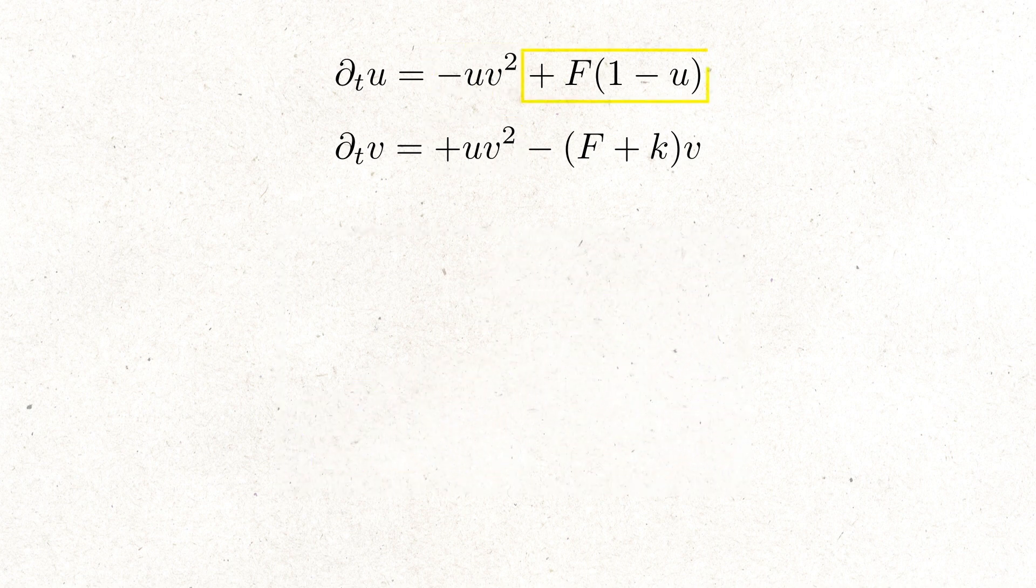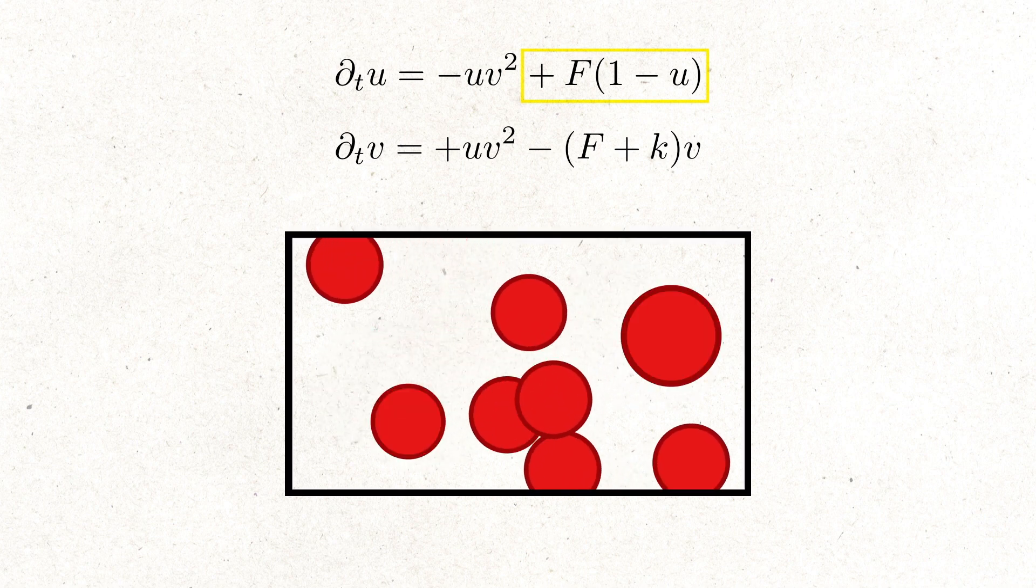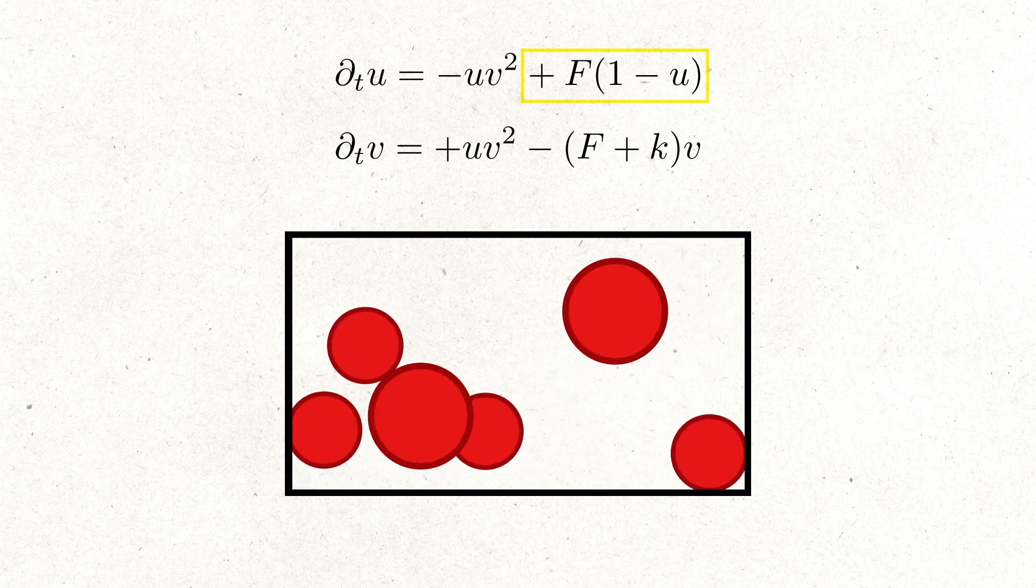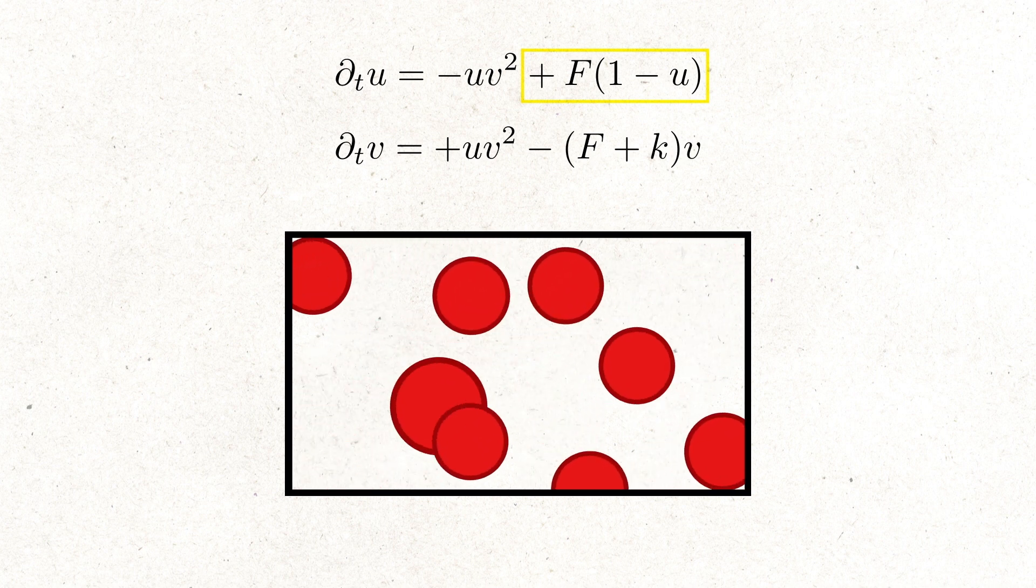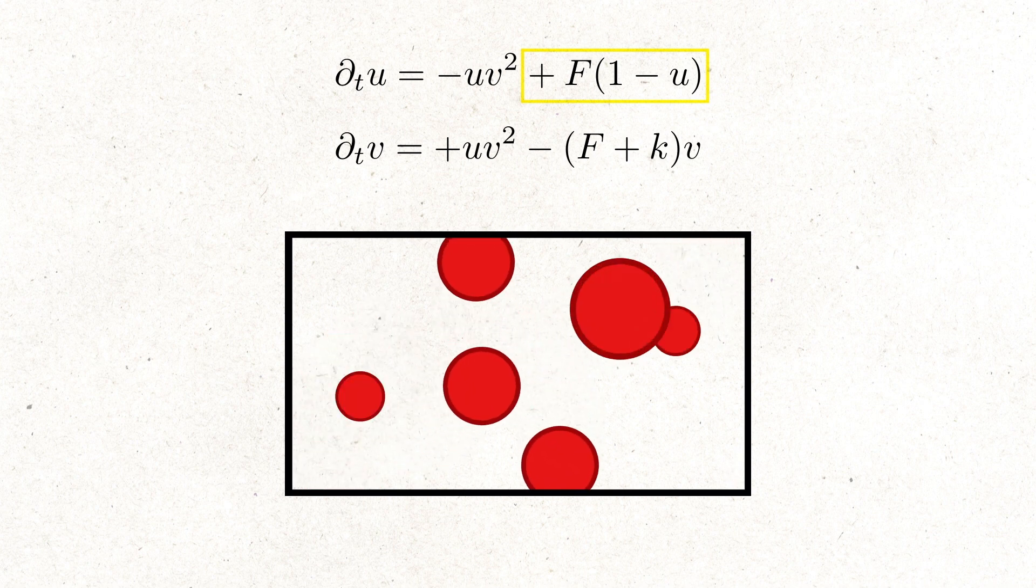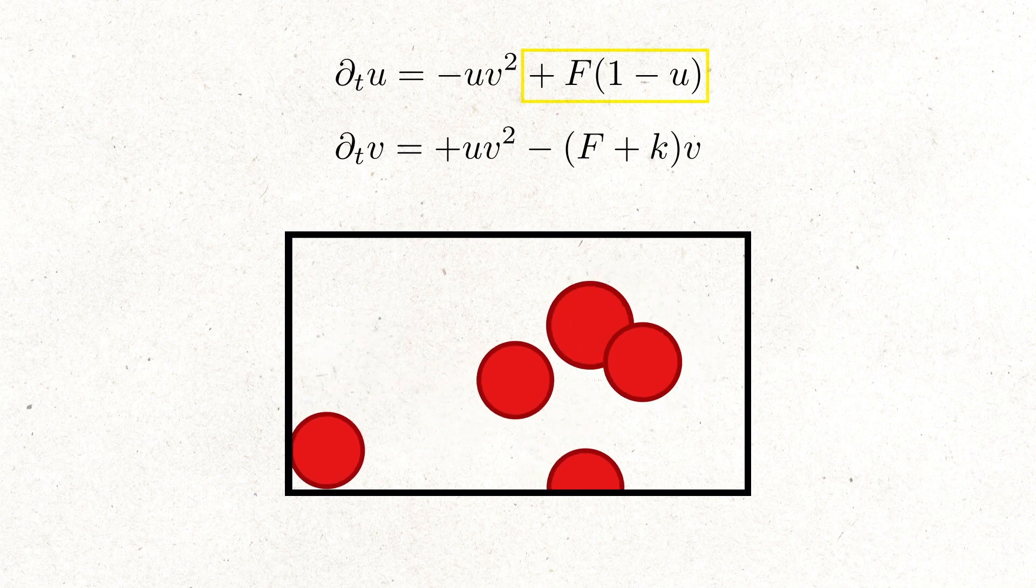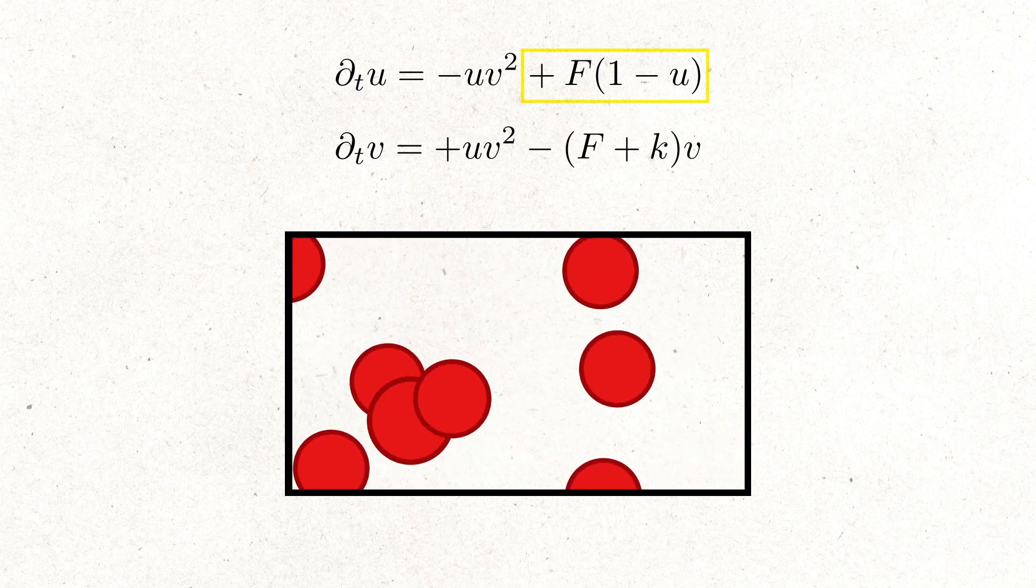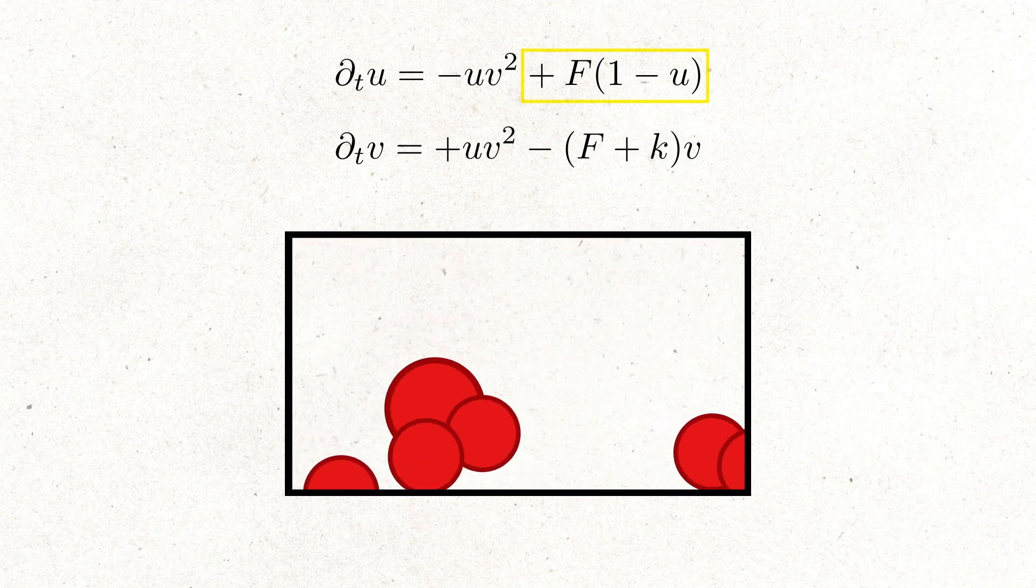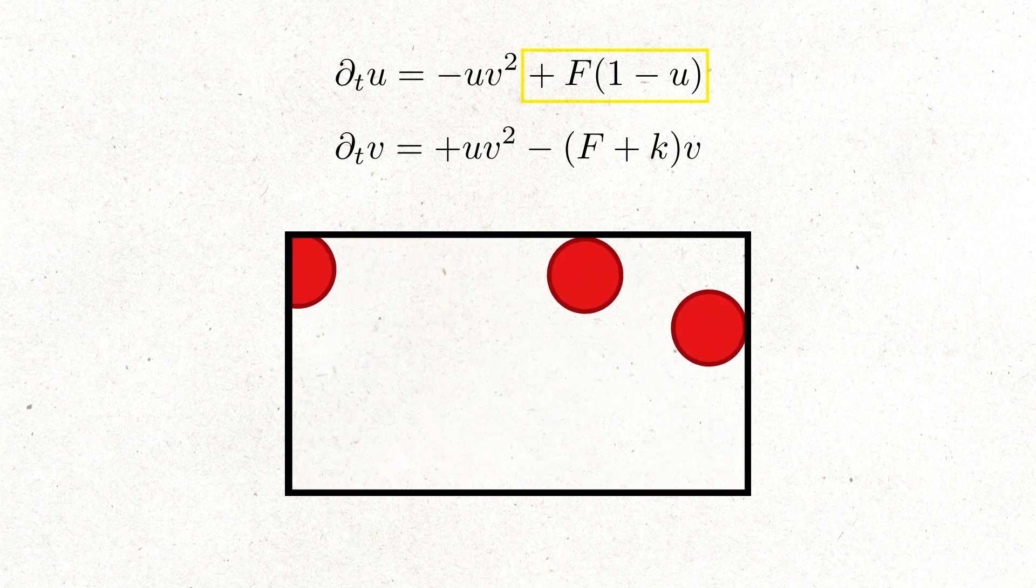The second term on the right-hand side in the first equation describes how substance U is constantly added. This is necessary as otherwise U would simply be used out. The feed rate is given by a parameter F multiplied by 1 minus U. That measures that U is added by a rate dependent on the current concentration which never exceeds 1. To elaborate on that, the more substance U we have, the smaller is the rate in which new substance U is added.